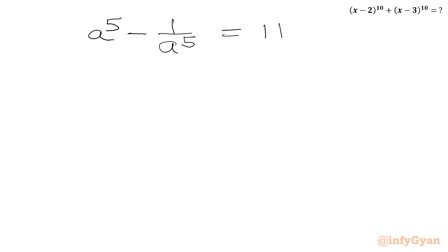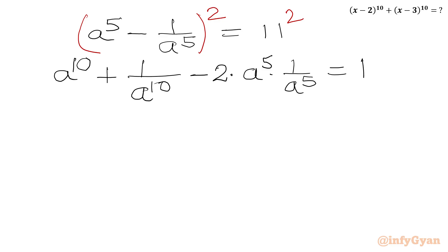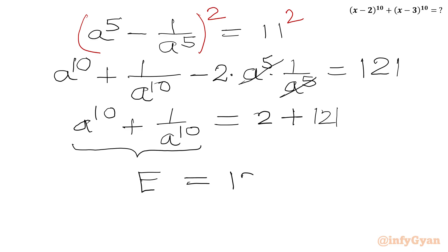Now squaring both sides of A⁵ - 1/A⁵ = 11, applying the (A - B)² formula: A¹⁰ + 1/A¹⁰ - 2·A⁵·(1/A⁵) = 121. The middle terms cancel, so A¹⁰ + 1/A¹⁰ = 121 + 2 = 123. Therefore, our final answer for expression E is 123.